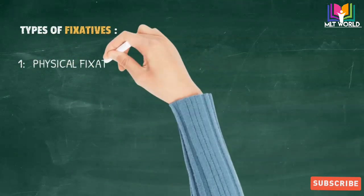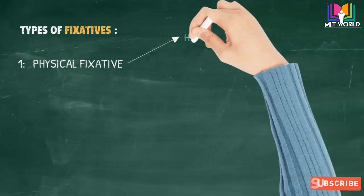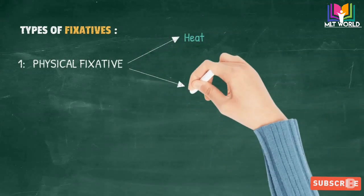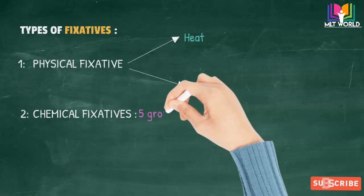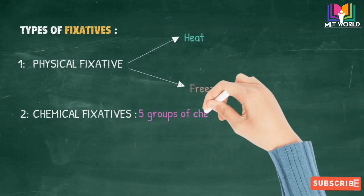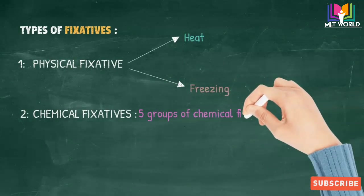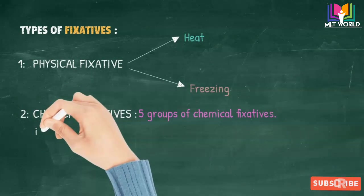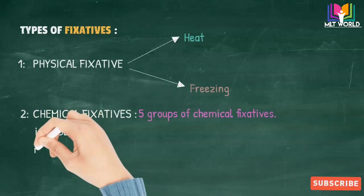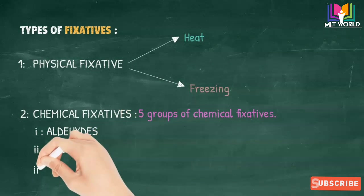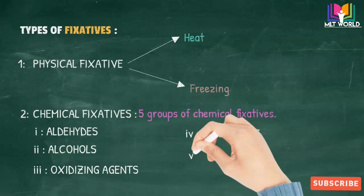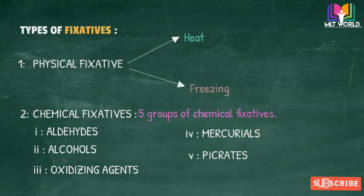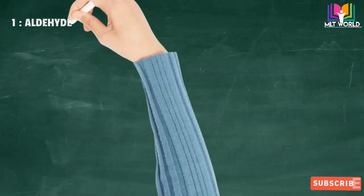The concentration of the fixative should be isotonic or hypotonic. Now we will discuss the types of fixatives. There are two types: physical and chemical. Physical is done by heat and freezing. Chemical fixatives are divided into five groups: aldehydes, alcohols, oxidizing agents, mercurials, and picrates.